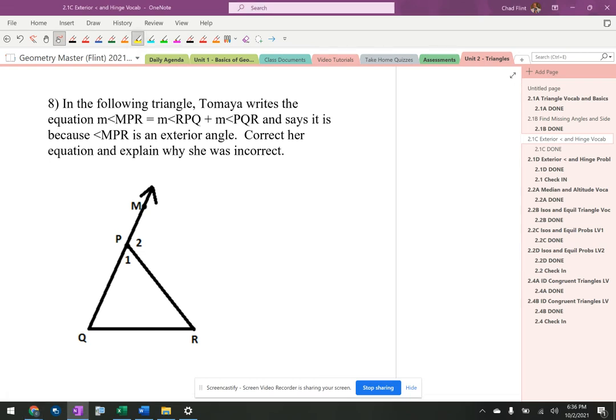We've got an equation we're supposed to evaluate here. The equation says m∠MPR, which is that angle on the outside, equals ∠RQP, which is over here, plus ∠PQR.